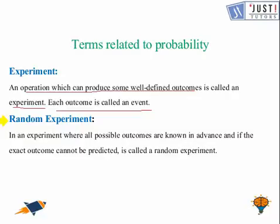Here what is random experiment? So in an experiment where all possible outcomes are known in advance and if the exact outcome cannot be predicted, that is called a random experiment.